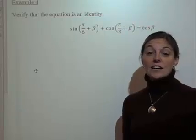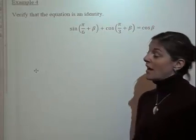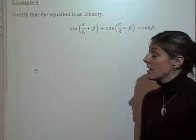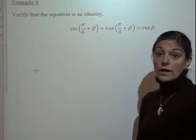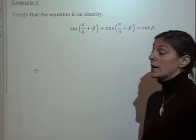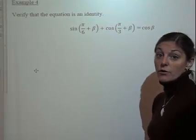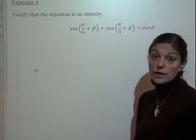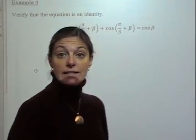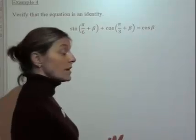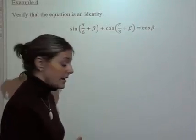Let's take a look at example number 4. We need to verify that the equation is an identity: sine of (pi over 6 plus beta) plus cosine of (pi over 3 plus beta) equals cosine beta. We're going to use our sum identities to show that this actually equals cosine beta.